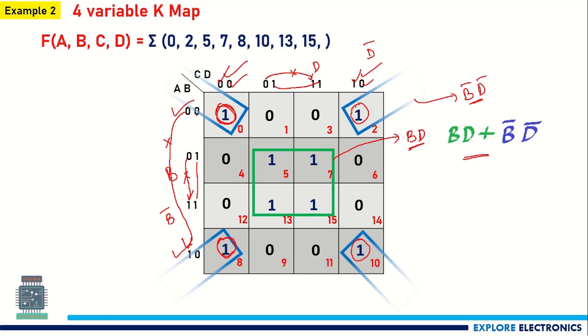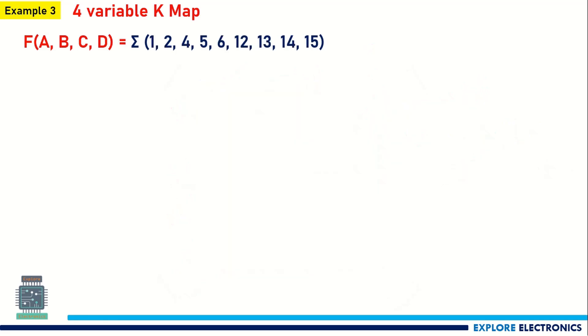This is how we group corner cell values. This expression — B·D + B-bar·D-bar — represents an XNOR gate.